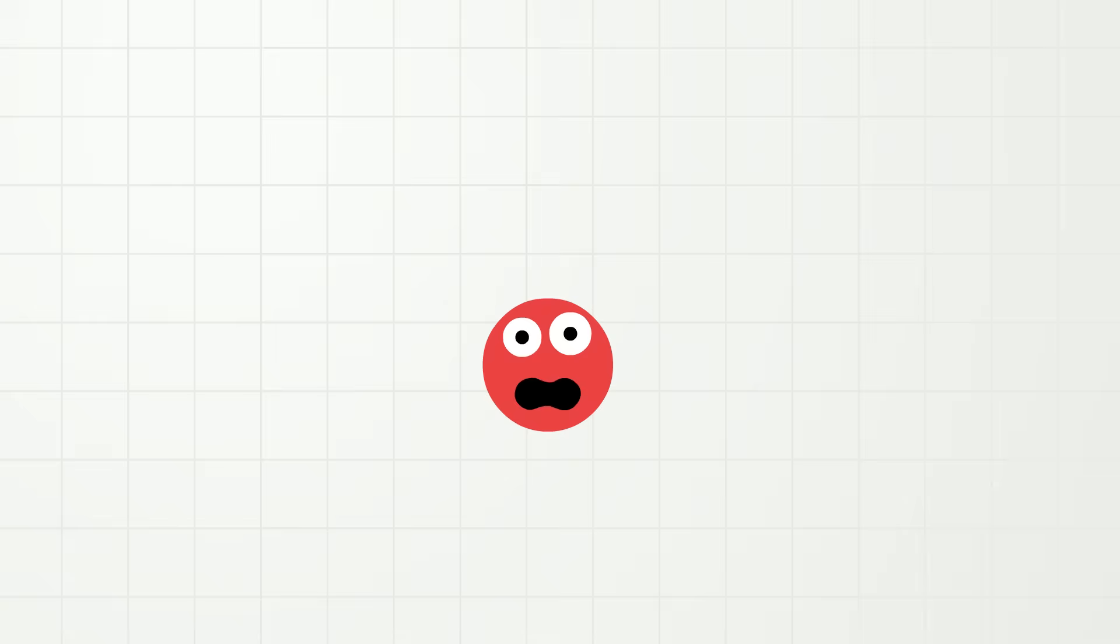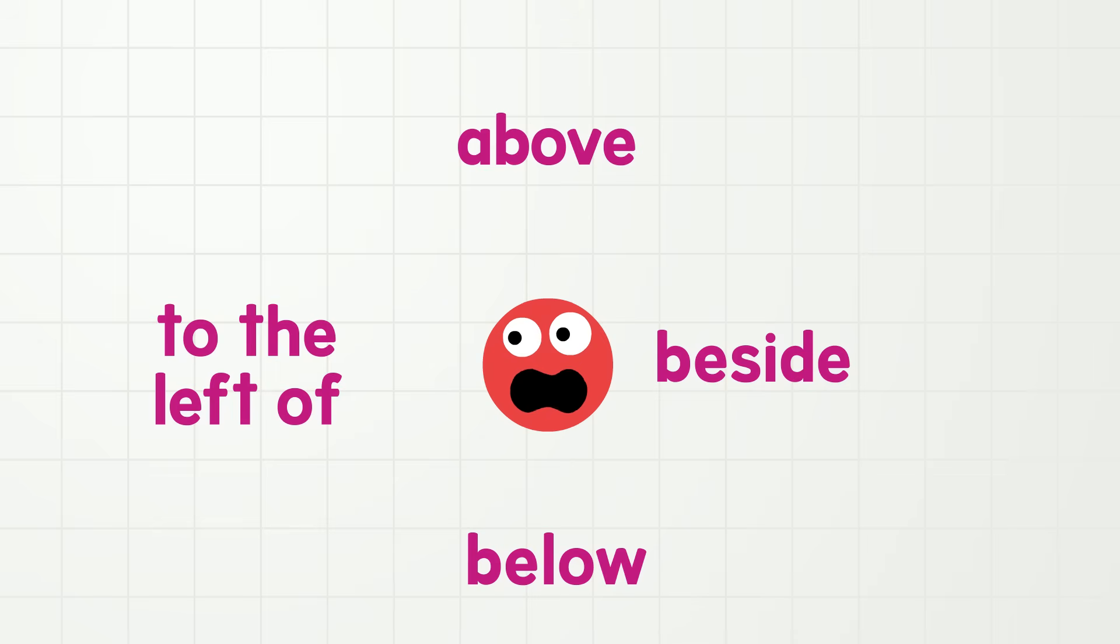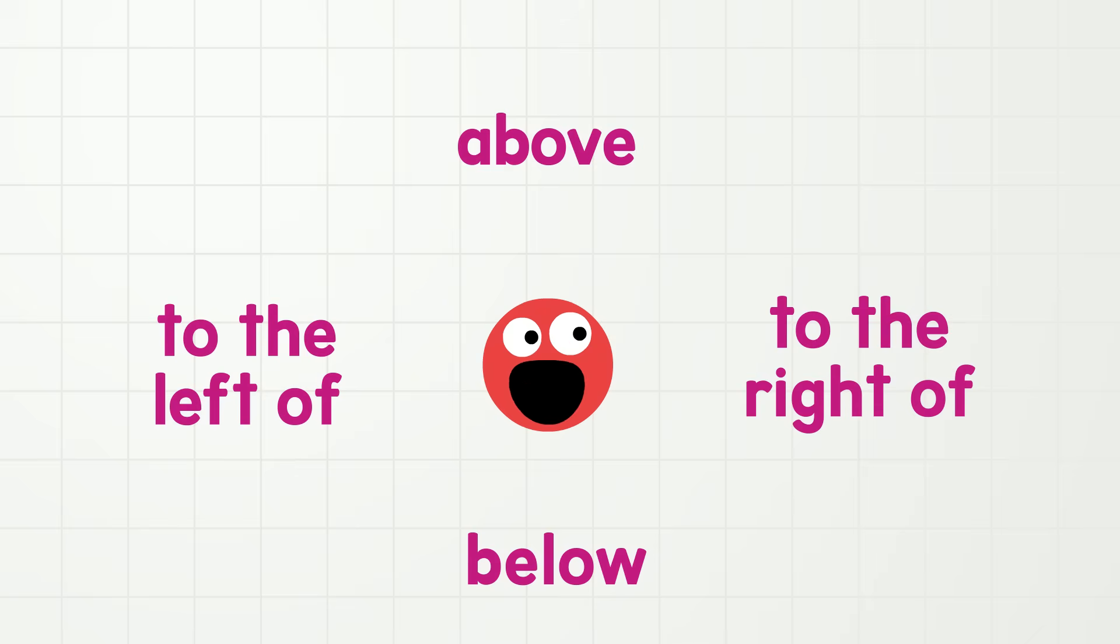So you see all of these words, words like beside, above, below, and to the left of, and to the right of, these are all great words to say where something is! You know, location! Location!